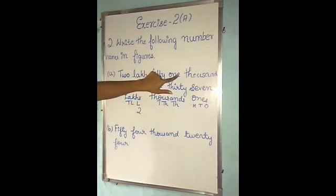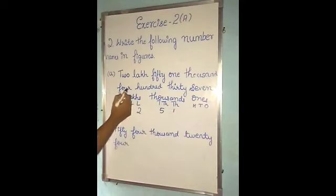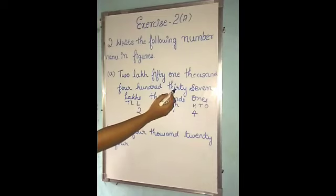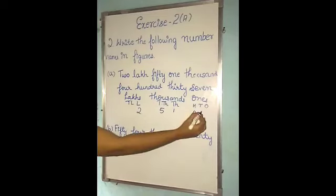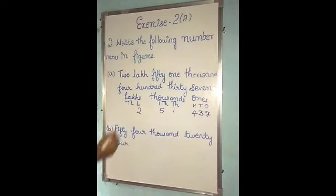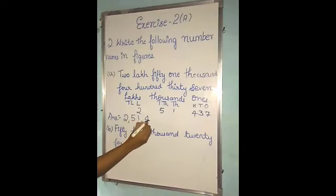Next is 51,000. Five at the ten-thousands place. And I will write 1 in the place of thousands. Then four hundred — that means 4 at the hundreds place. So I will write 4 in the place of hundreds. Then thirty-seven: 3 at the tens place and 7 at the ones place.